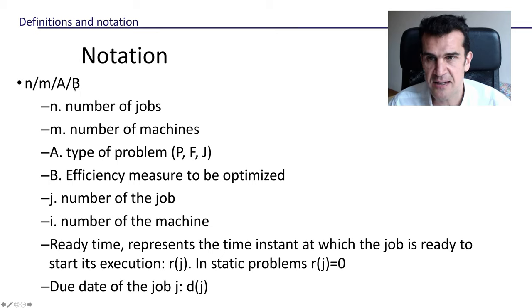And the final letter will indicate the efficiency measure that we want to optimize, and we will talk about this in the next video. Usually, I'm going to try to use the letter J for job to make things easier, and the letter I for the number of the machine.